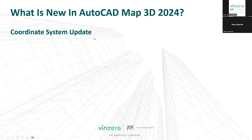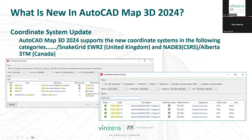Map 3D — I'm not going to actually start the product. They've done some coordinate system updates. They've added the Snake Grid AWR, which is for the UK, and NAD 83, which is for Canada. Really, unless you are working in the UK or in Canada on projects, you're not going to get any benefit with any of the new tools except what came with AutoCAD for Map 3D.